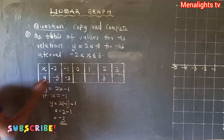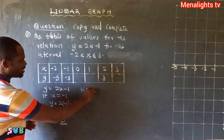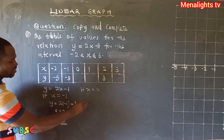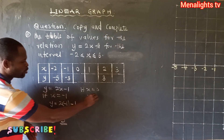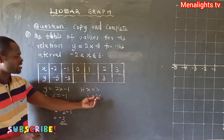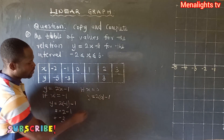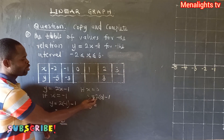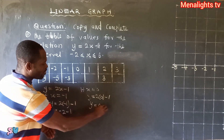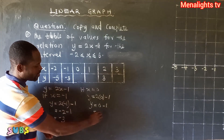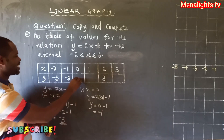Next, if x = 0, then y = 2x - 1. In place of x we put 0, so we have 2 × 0 = 0, then 0 - 1 = -1. So under x = 0, the value of y is -1.